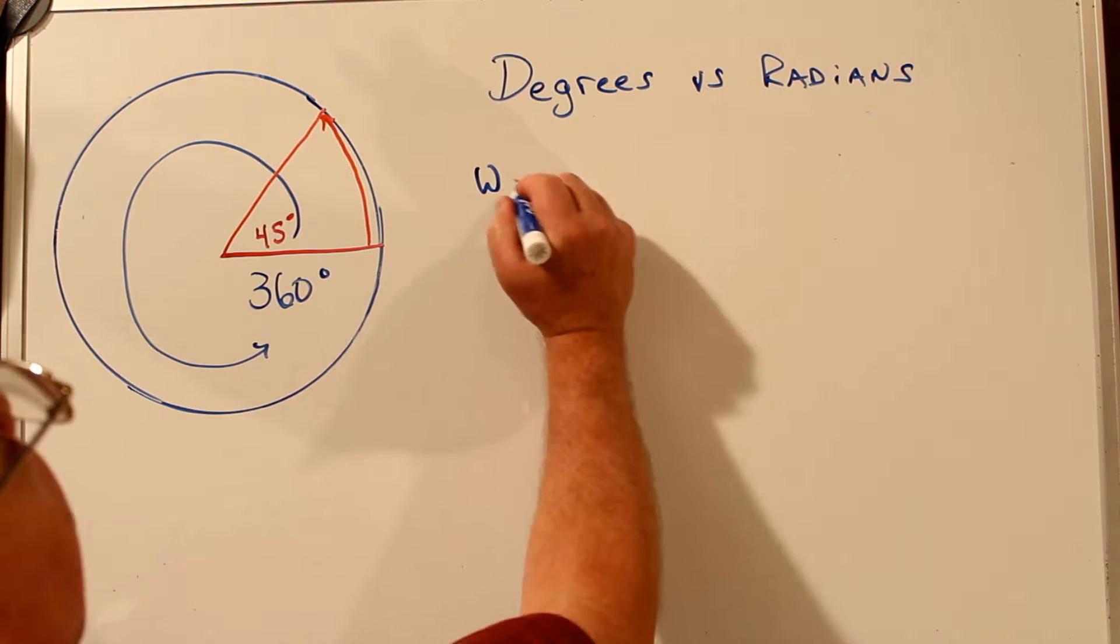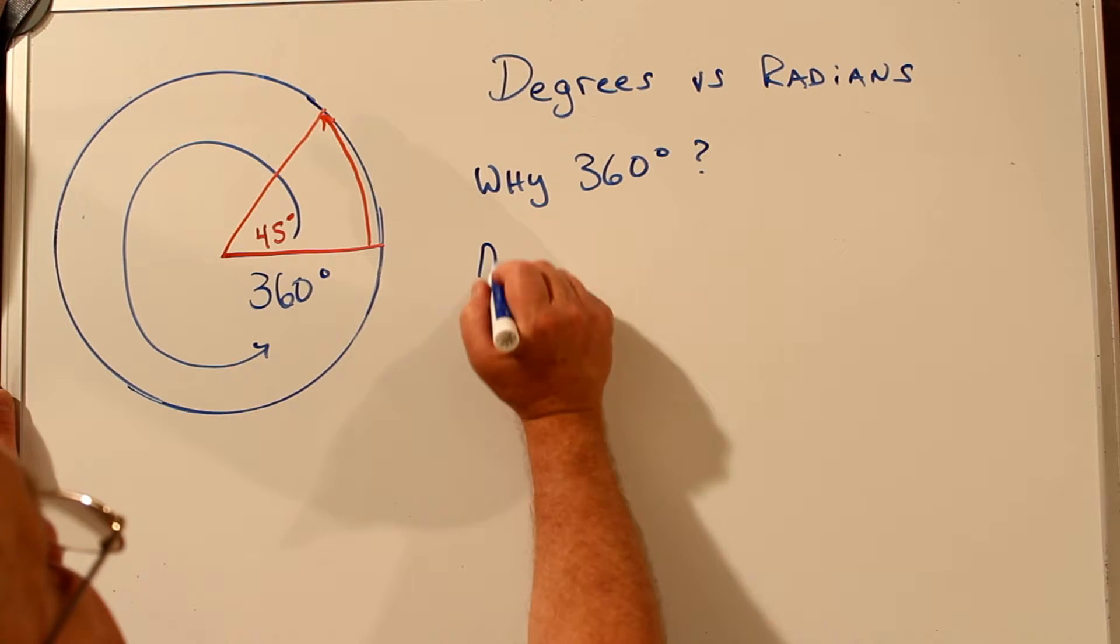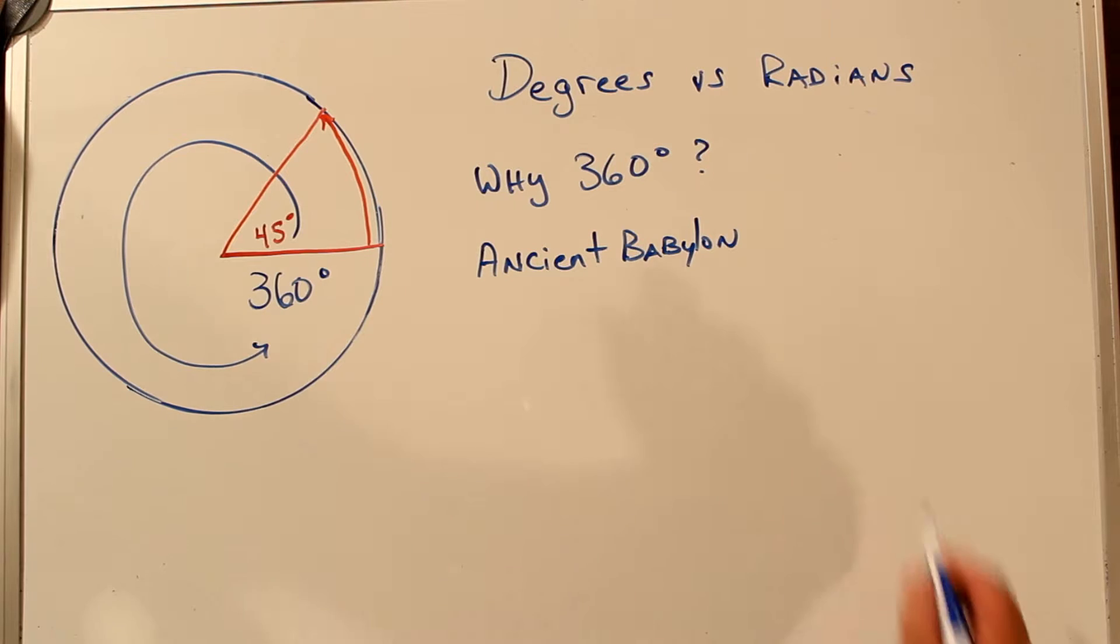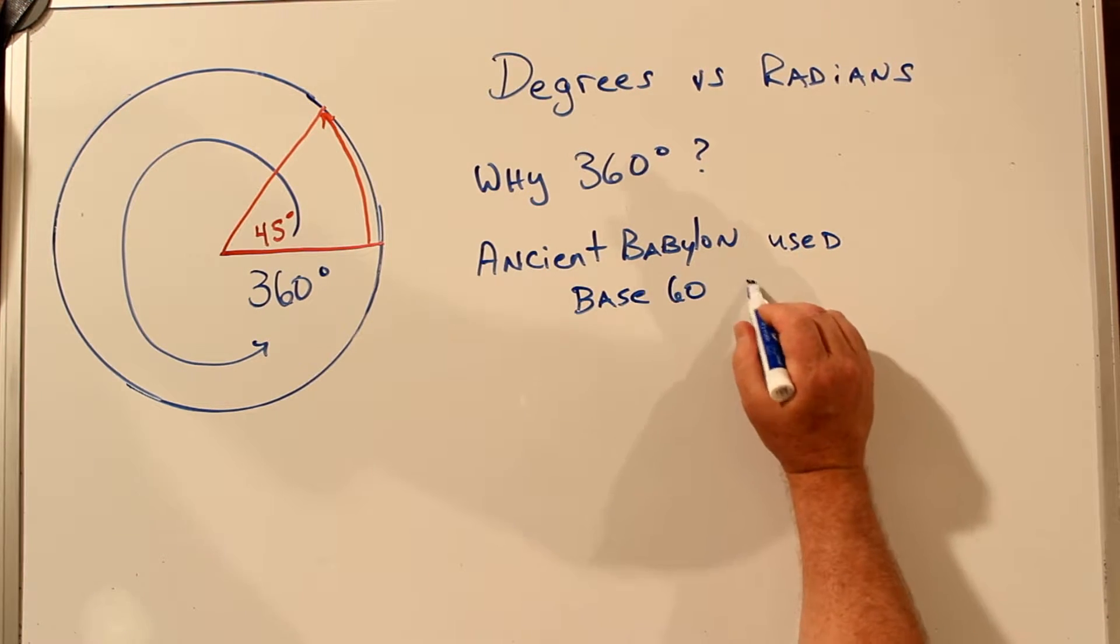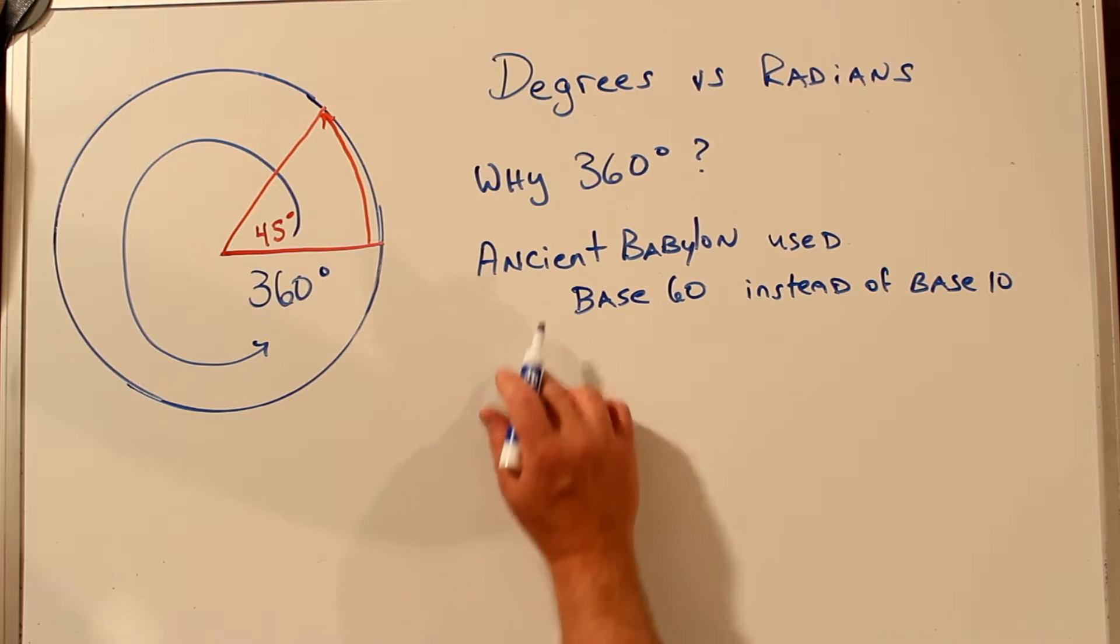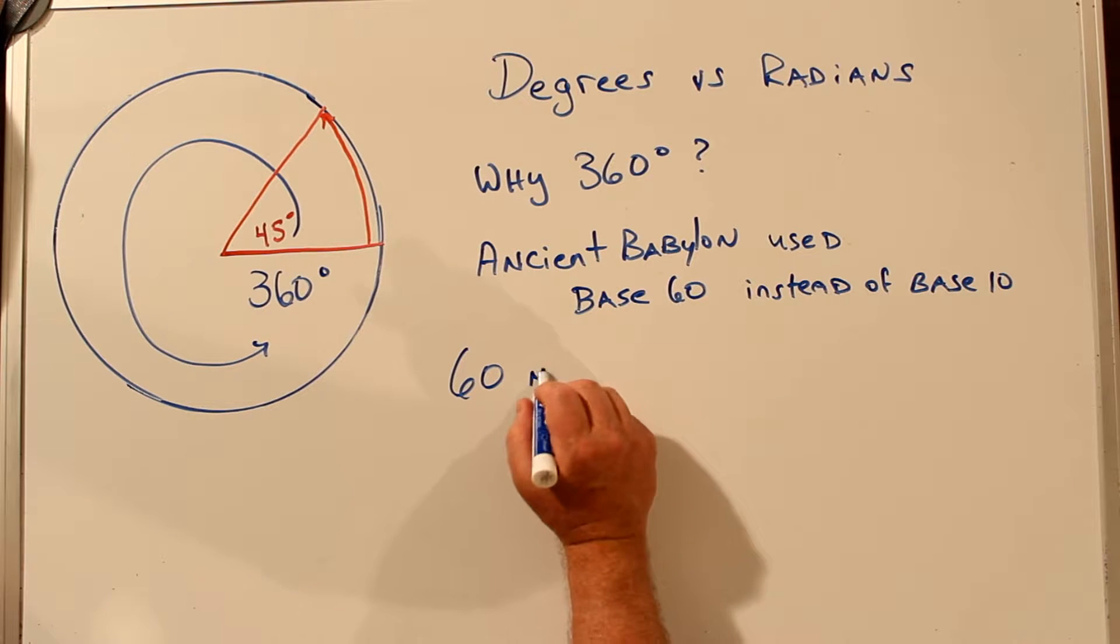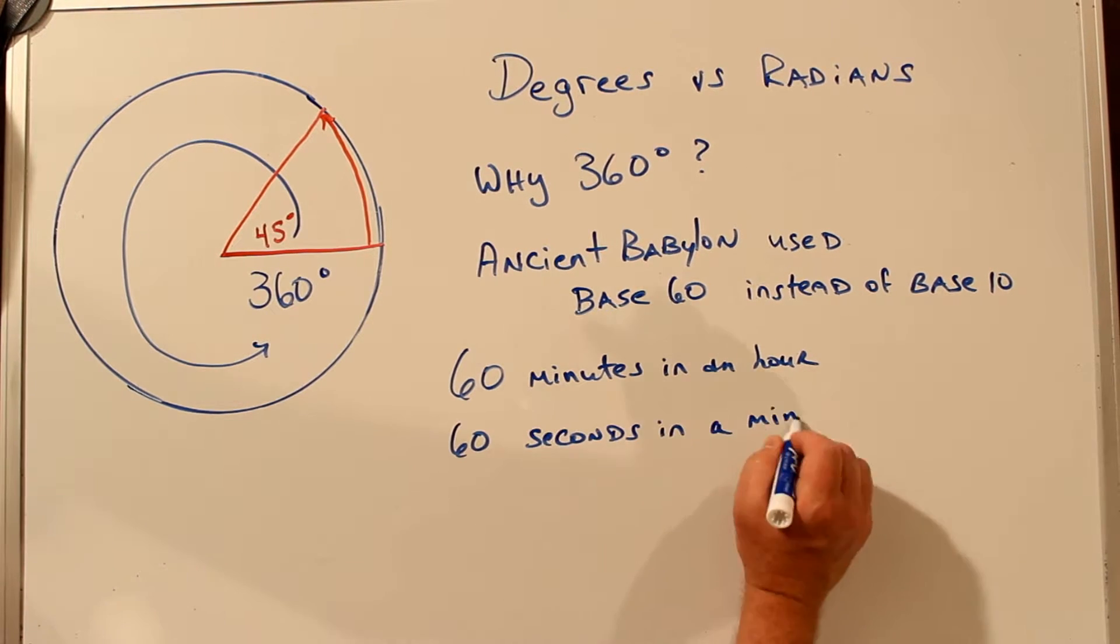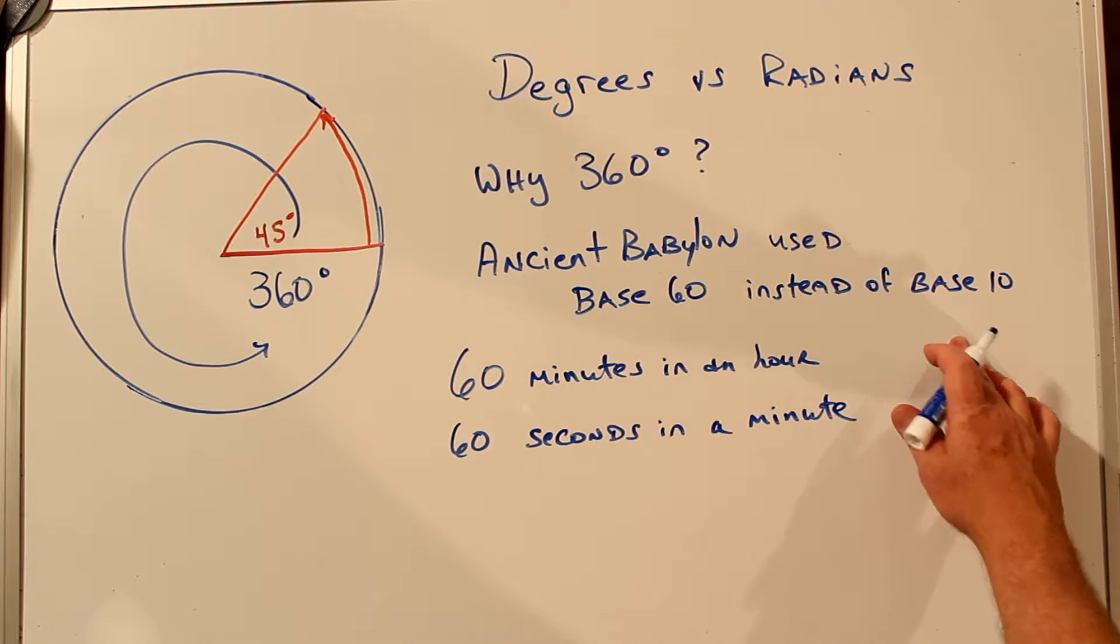So let's look at why 360 degrees. The answer is, it goes all the way back to the mathematics used by ancient Babylon, who used base 60 numbering system instead of base 10. You'll notice 360 is divisible by 60. We have 60 minutes in an hour, 60 seconds in a minute, all because ancient Babylon used base 60 instead of base 10.